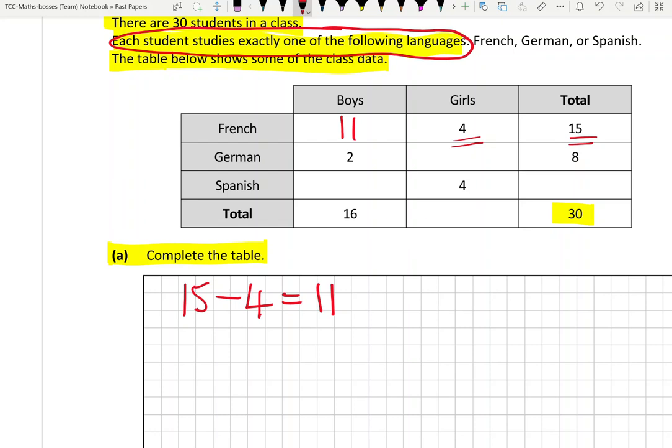Let's go to the next row, which is the row for German. For German, there are two boys studying German, and in total there are eight students studying German. So how many of them are girls? Well, it must be 8 subtract 2, and that's 6.